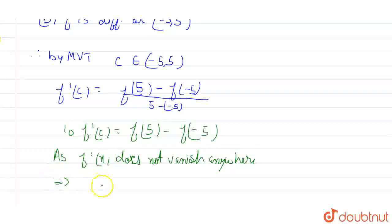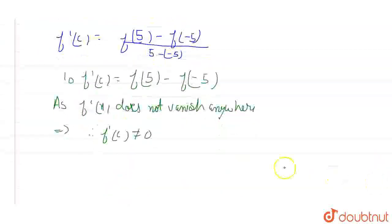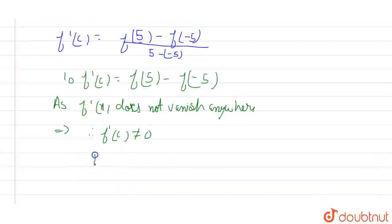Therefore we can say that f'(c) should never be equal to 0. If you multiply it with 10 to both sides, we will get 10f'(c) should never be equal to 0. And we know that this one is equal to this one. So we can write it down as f(5) - f(-5) never equals to 0.